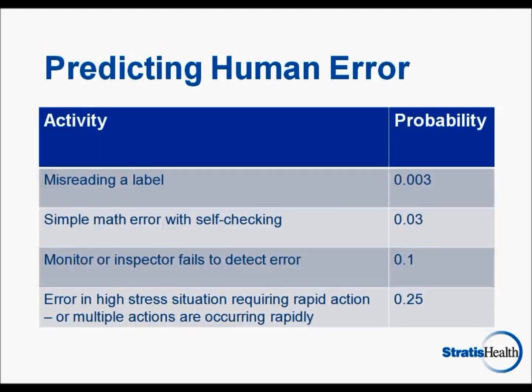A very important concept in human factors is that human error is actually predictable and the expected rate of error can be measured. This table shows the probability of error in a few situations. For example, reading labels is something we are generally good at and the probability of error is low, but not zero — three out of a thousand times we read a label, we will make a mistake. While this sounds very low, it can actually represent a fair number of errors since this is a very common task.